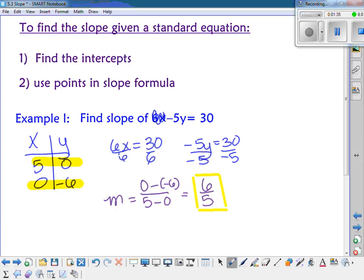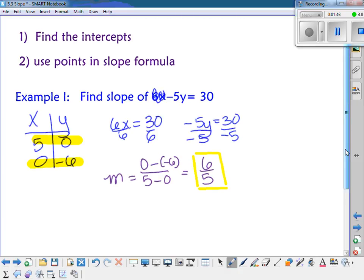It's still the same slope formula. We're just finding the two points that are the intercepts and then plugging it into y sub 2 minus y sub 1 over x sub 2 minus x sub 1. It's the same formula, okay? All right, so on your whiteboards,